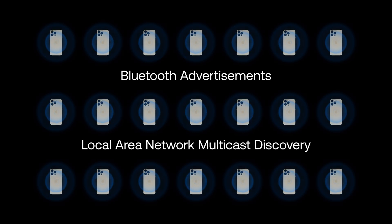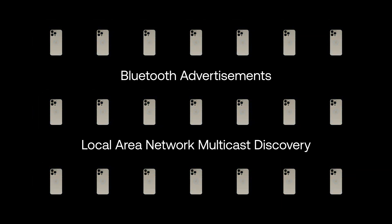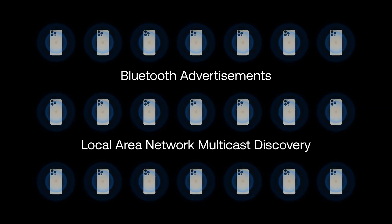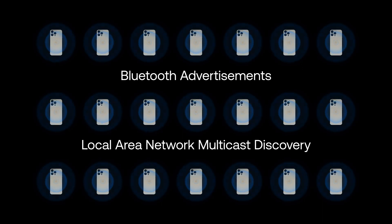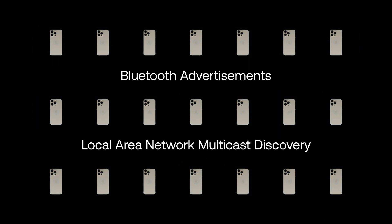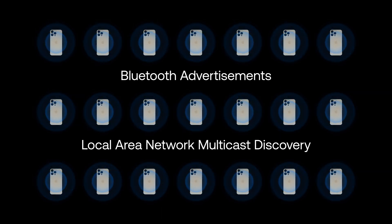A common question is: how do these small peers find each other to create a multi-hop mesh network? When we start each small peer, they attempt to create a presence graph by advertising and forming connections using technologies like Bluetooth advertisements and multicast advertisements on the local area network.